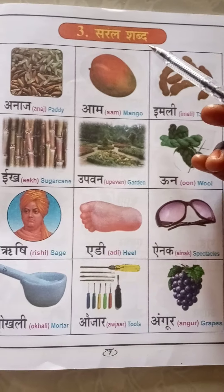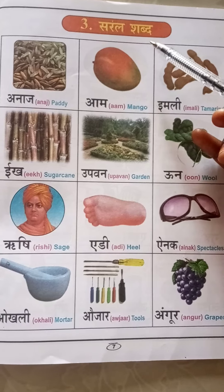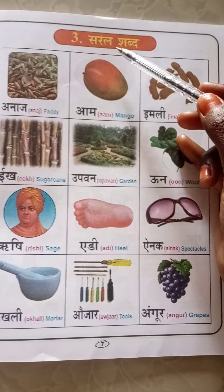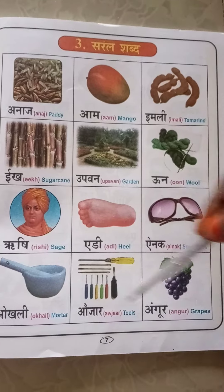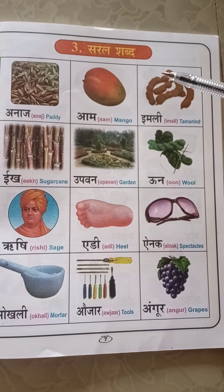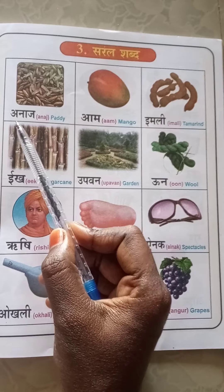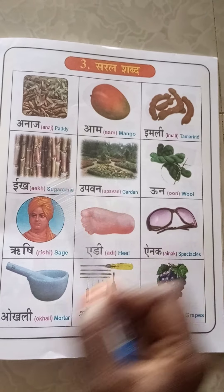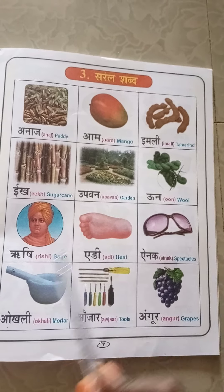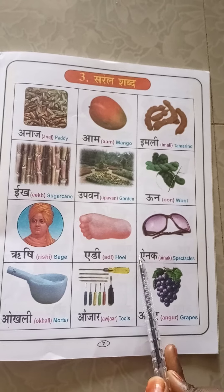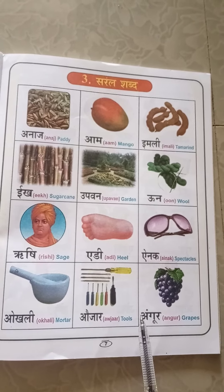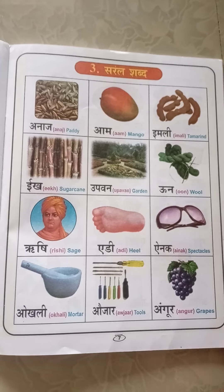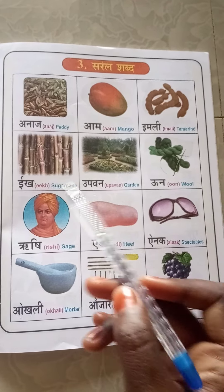Dear students, happy morning to you all. Today we are going to learn about saral sabda — saral means easy, sabda means words. So today we are going to read easy words. Before reading, first see the first letter of all words. Here you see: a, a, i, e, o, u, r, e, i, o, au, am. What letters are these, my dear students? Yes, you are right — these are vowel letters. Shall we read the words now?